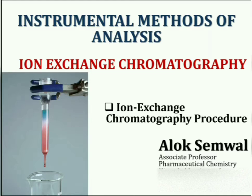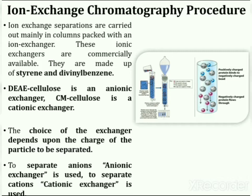Two types of ion exchangers are used in ion exchange chromatography: cationic and anionic exchangers. Ion exchange separations are carried out mainly in columns packed with an ion exchanger. Commercially available ion exchangers are made up of styrene and divinyl benzene. Diethylaminoethyl cellulose is an anionic exchanger and carboxymethyl cellulose is a cationic exchanger.